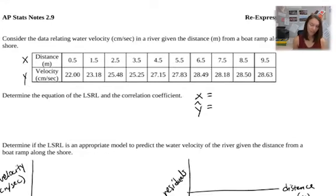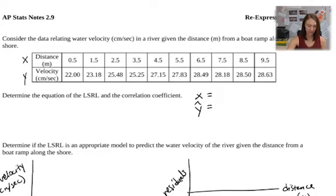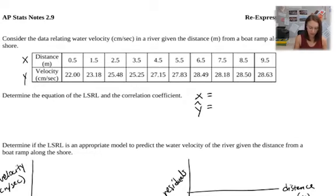Get your graphing calculators and pause the video to put your values from your table into your lists. I've already done that by going to stat, then edit, and putting the lists in L1 and L2. We have data relating water velocity in centimeters per second in a river, given the distance in meters from a boat ramp along the shore. Distance in meters is our explanatory x variable; velocity is our response y variable.